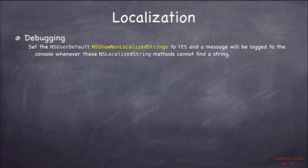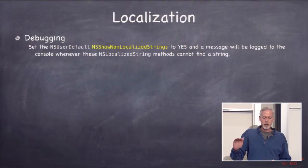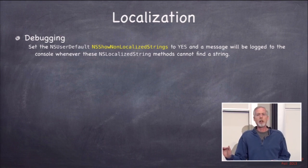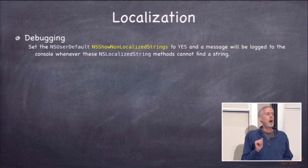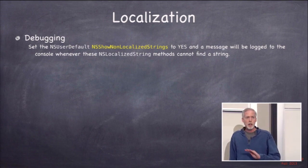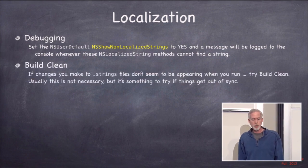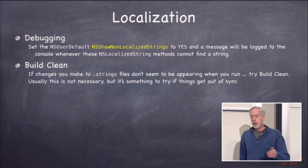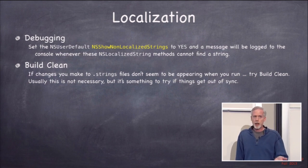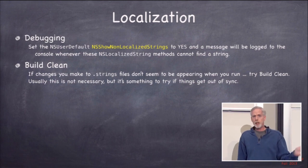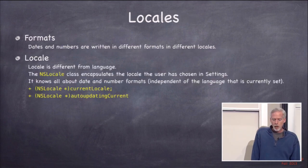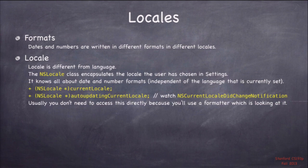A couple things about debugging localization: there's a really nice user default you can set called NSShowNonLocalizedStrings. Every time one of those NSLocalizedString macros does not find an entry in a strings file, you'll get a little log — so you'll know your localizer missed one. That's important for QA of your localizations. Also, if you add strings to a localization and it's not getting the new changes, building clean and reinstalling seems to solve that problem.